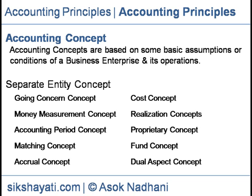This concept makes a distinction between personal transaction and business transaction. Example: X started a business with Rs. 5 lakh. As per the concept, it means the enterprise owes to X Rs. 5 lakh. The proprietor of a business is treated as a creditor for capital. If he spends Rs. 6,000 to meet his family expenses, it will be treated as drawing, not as business expenses, and would be charged to his capital account. Likewise, shareholders are treated as creditors for the amount they subscribed to share capital.